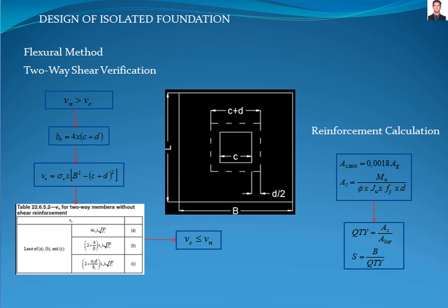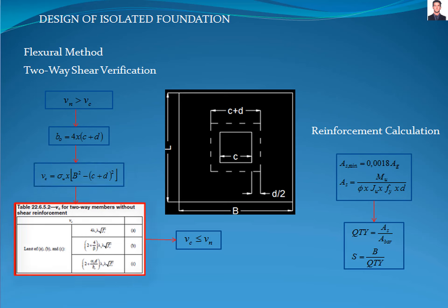Now we proceed to verify the foundation for two-way shear, also called punching shear verification. The nominal shear strength shall be calculated with the equations 22.6.1.2 of the ACI 318 standard, where Vn is the nominal shear strength for two-way shear verification and Vc is the shear strength of the critical section. First, we calculate the critical perimeter B0 defined in section 22.6.4 of the ACI 318 standard. After that, we calculate Vc with this equation, then calculate the nominal shear strength using table 22.6.5.2 of the ACI 318 standard, and verify that the shear strength of the critical section is less than the nominal shear strength of the concrete.